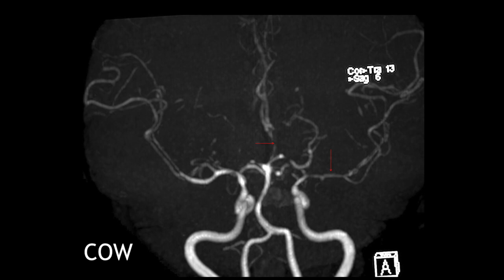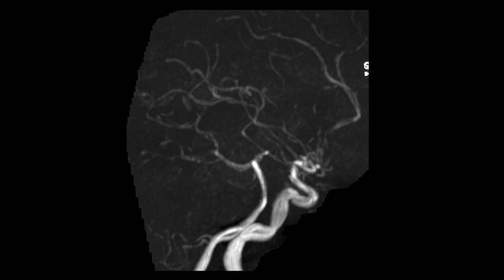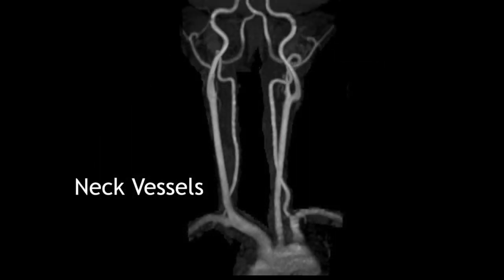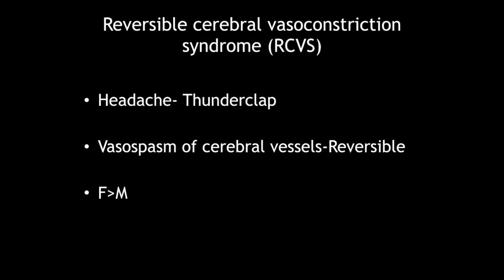MR angiography of the circle of Willis showed bilateral internal carotid arteries in their intracranial segments, as well as bilateral intracranial vertebral and basilar arteries, to be good-calibered with good flow. However, bilateral middle cerebral and anterior cerebral arteries were small in caliber with patchy poor flow, and multiple short segments of narrowing were seen within them bilaterally, with attenuation of peripheral vessels. Both posterior cerebral arteries showed similar multifocal narrowing. Neck vessels showed good flow. This is a stroke mimic called RCVS — reversible cerebral vasoconstriction syndrome — presenting classically with thunderclap headache due to reversible vasospasm of cerebral vessels.